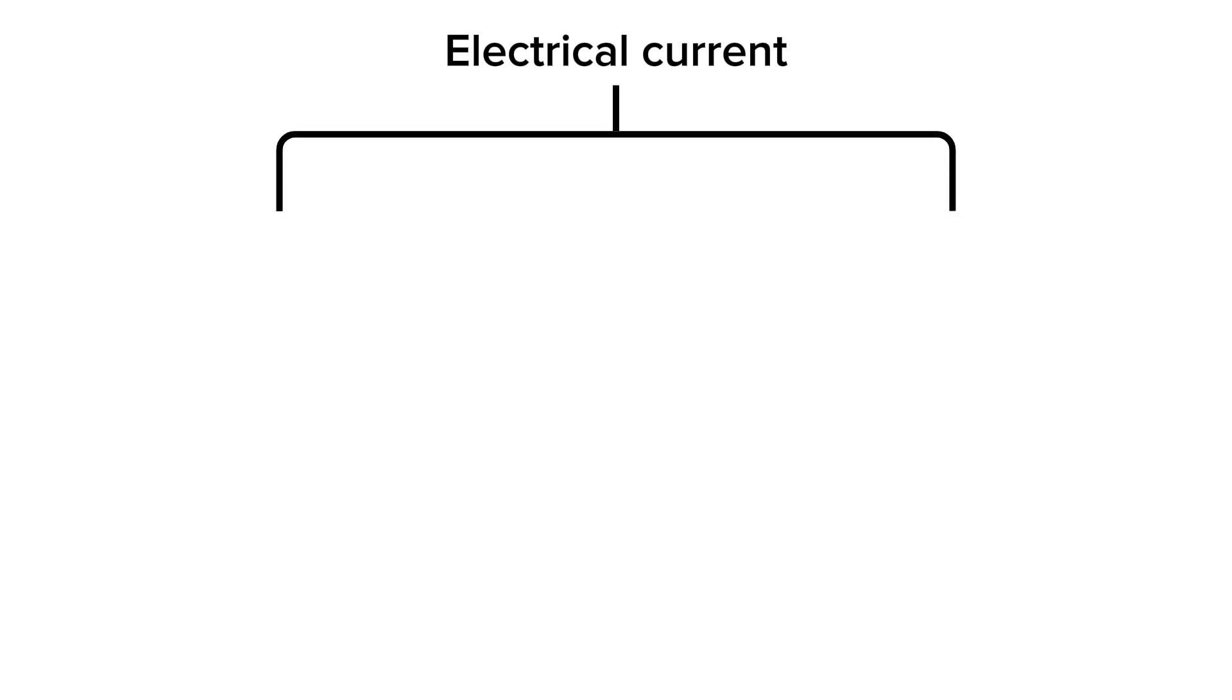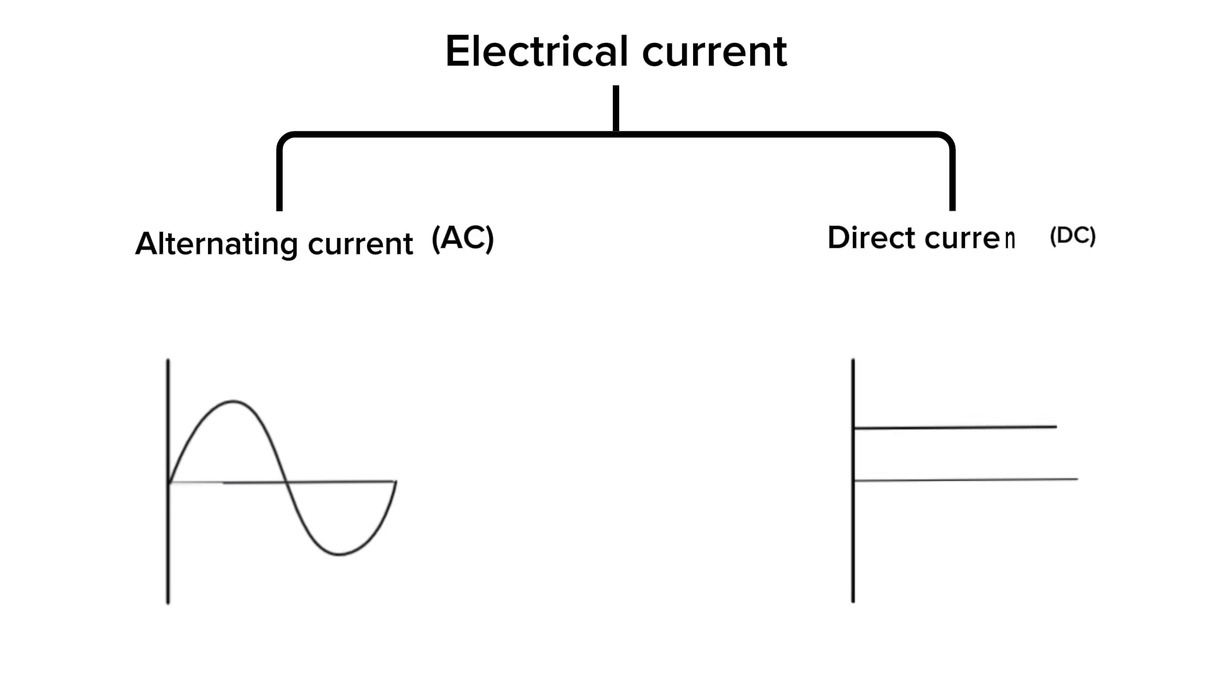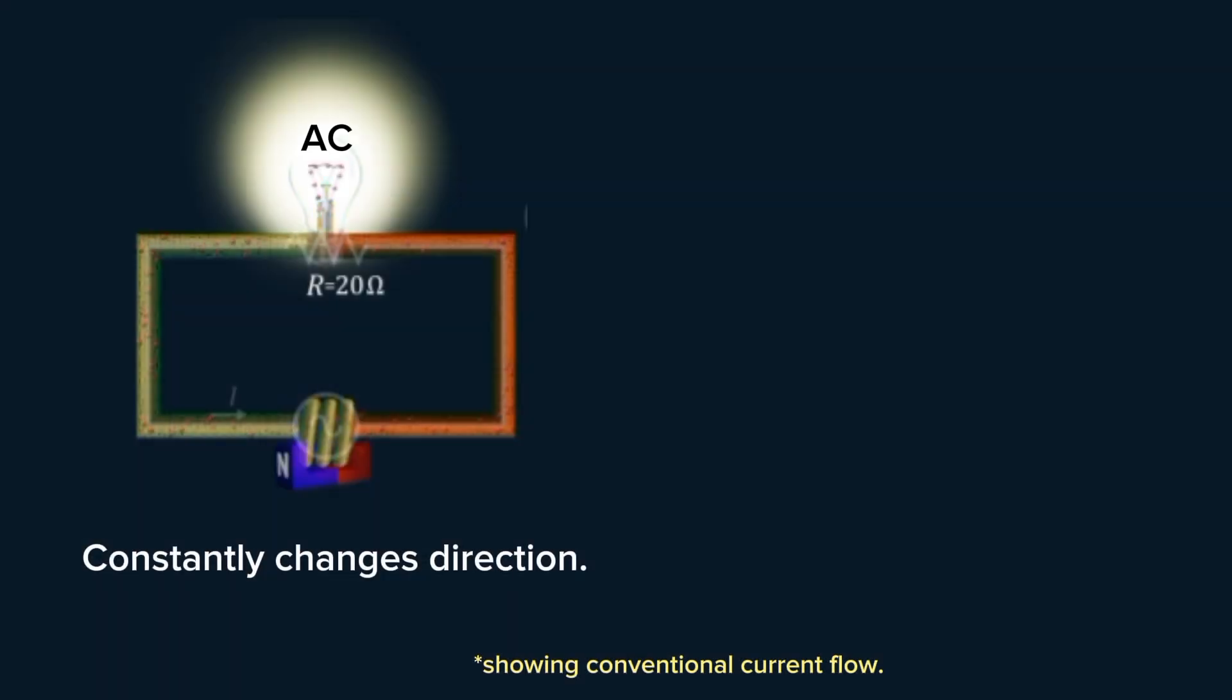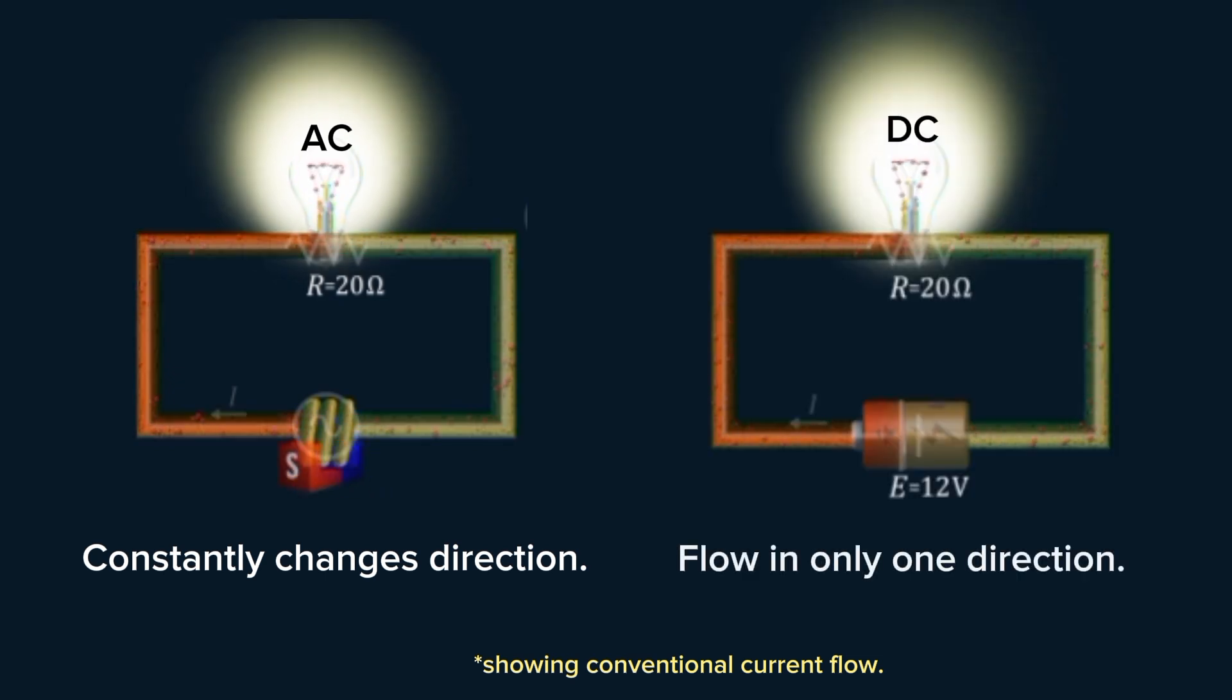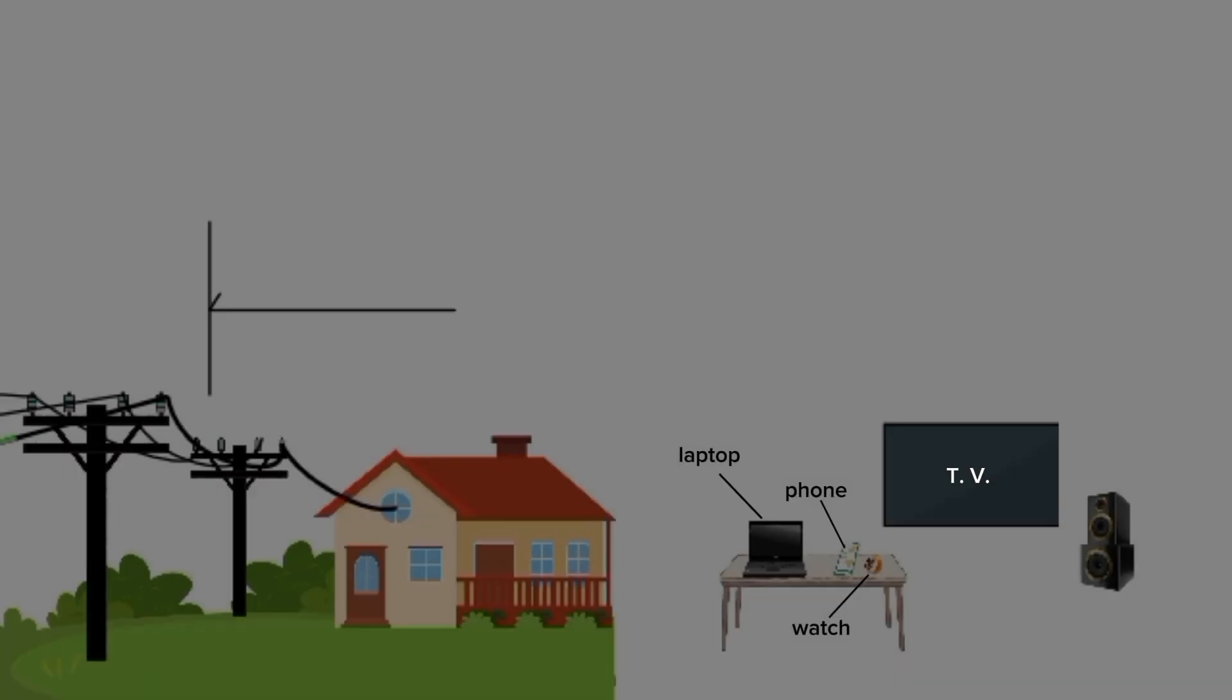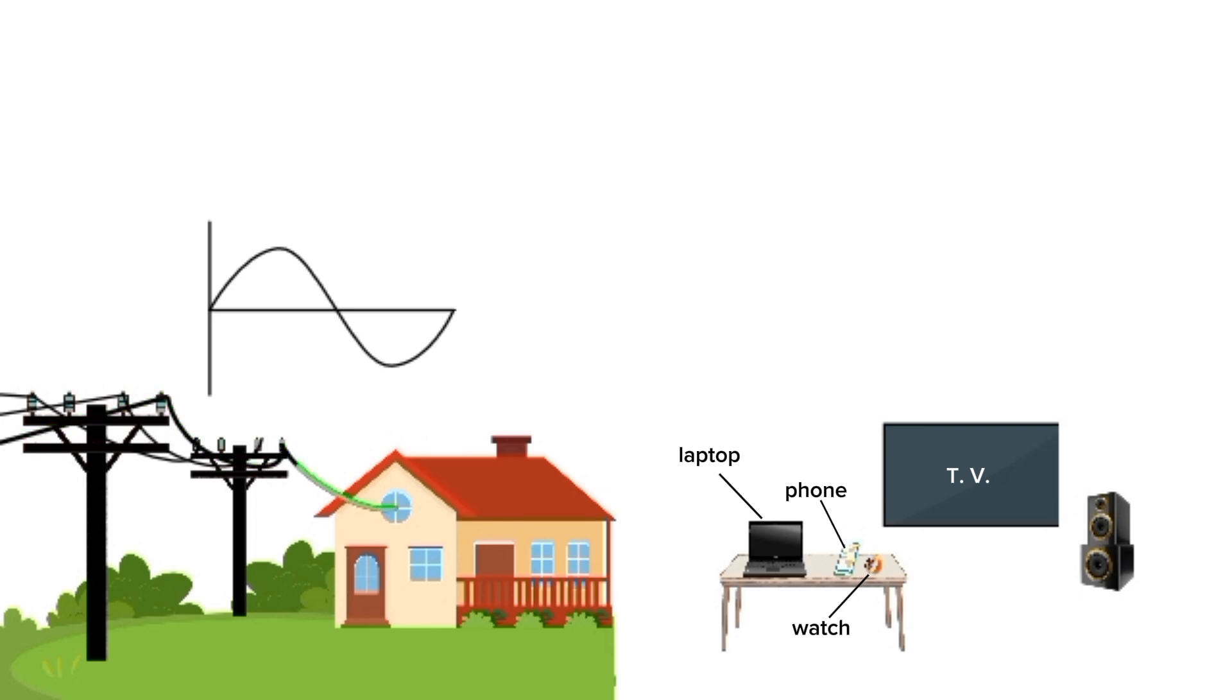There are two main types of electrical currents commonly used: alternating current AC and direct current DC. AC constantly changes direction while DC flows in only one direction. In our houses, we receive AC from the power grid, but most electronic devices require DC.